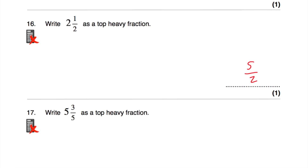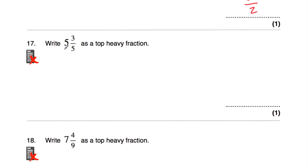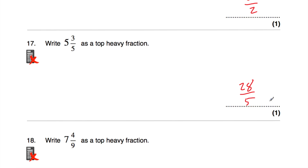Question number 17: write 5 and 3 fifths as a top-heavy fraction. Take our 5 and times it by the denominator: 5 times 5 is 25, so that's 25 fifths. And another 3 fifths would be 28 fifths. A way to check: if you've got 5 wholes and you're dealing with fifths, you have 25 fifths altogether, then add the 3 to get 28 fifths.